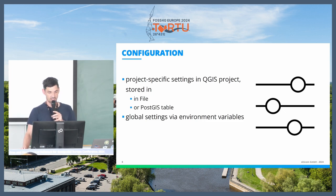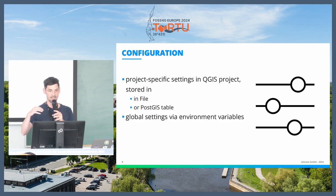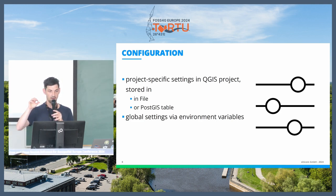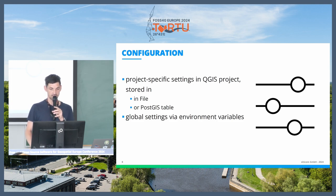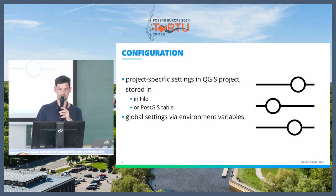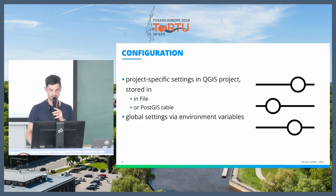How can you configure the project itself or QGIS Server? When you want to publish some layers, you create a QGIS project, add some layers to it, and it will be understood by QGIS Server and can be published. You can store the QGIS project either as a file or in a PostGIS table, and QGIS Server has to have access to this. There are also some global settings you can pass to QGIS Server, like how many processes it should have, configured with environmental variables.